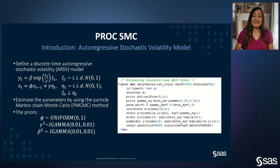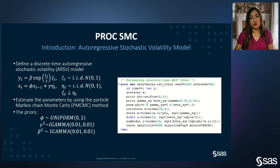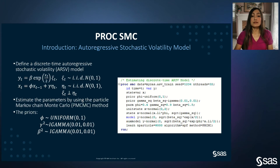Specifying your model in PROC SMC is not hard. As an illustration, consider defining an autoregressive stochastic volatility, or ARSV, model and estimating the parameters using the particle Markov chain Monte Carlo, or PMCMC, method. The ARSV model is given by two equations with parameters phi, gamma squared, and beta squared. For illustration, data are generated based on these model specifications with parameter values 0.9 for phi, 0.4 for gamma, and 1 for beta. After specifying prior distributions — phi is distributed uniformly and gamma squared and beta squared are inverse gamma — you can estimate this model using PROC SMC.